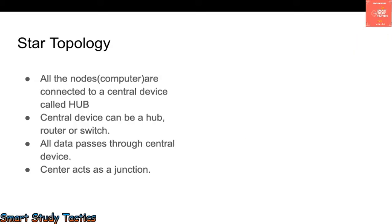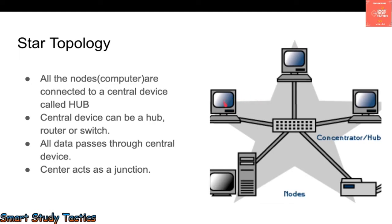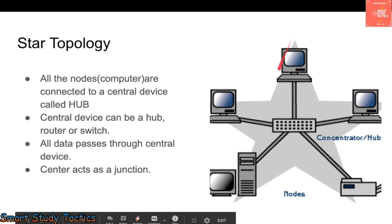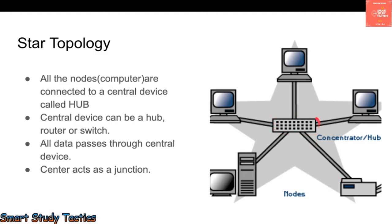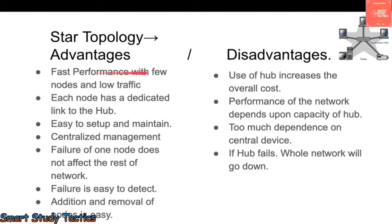Next is star topology. As you can see in the background, all devices are connected in a star figure. Unlike peer-to-peer, in star topology there is a hub, switch, or router in the middle, which is responsible for spreading messages between the network. All nodes are connected to this central hub, also known as the central junction, which is responsible for all communication between systems.